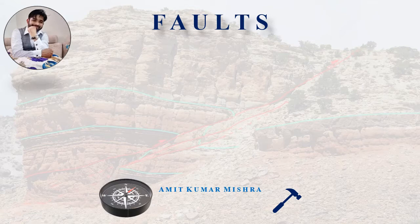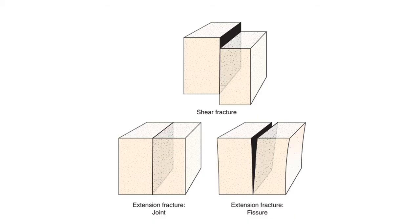Faults are important fractures in which mineralization can occur and they can be traps for petroleum. How are faults different from other fractures like joints? Joints are mostly extensional fractures, whereas faults are shear fractures. Shear stress must be present to produce a fault — you need to break the rock mass and move it either above, below, or past each other along a fault plane.